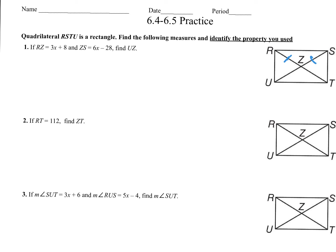Let's look at the 6.4, 6.5 brackets. We have a quadrilateral RSTU and it's telling us that this is a rectangle. RSTU. We need to find the following measures and identify the property we used.